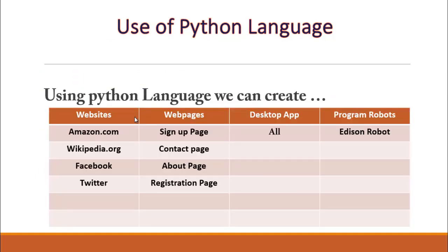Using Python language we can create websites, web pages, sign-up pages, contact pages, about pages, registration pages. Websites like Amazon, Wikipedia, Facebook, Twitter. And then desktop applications, and you will learn how to program robots like Edison.